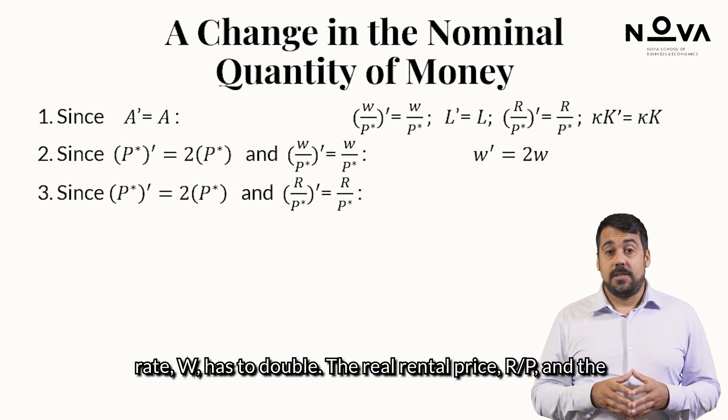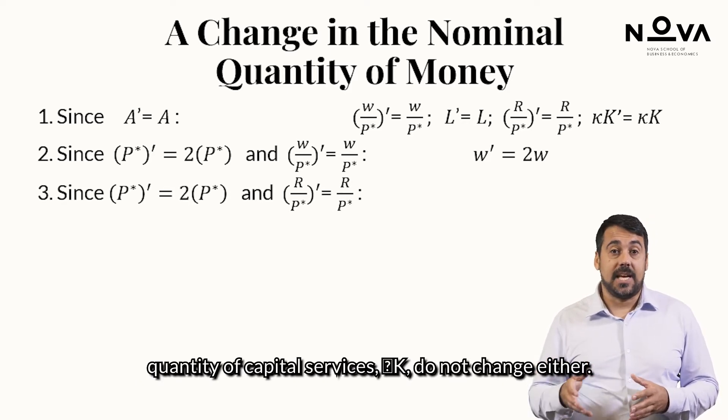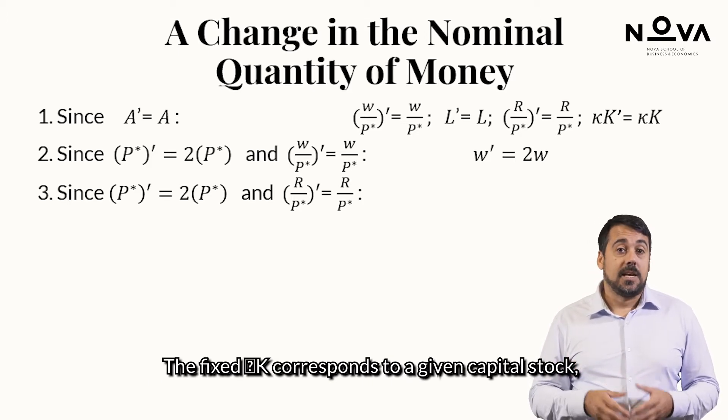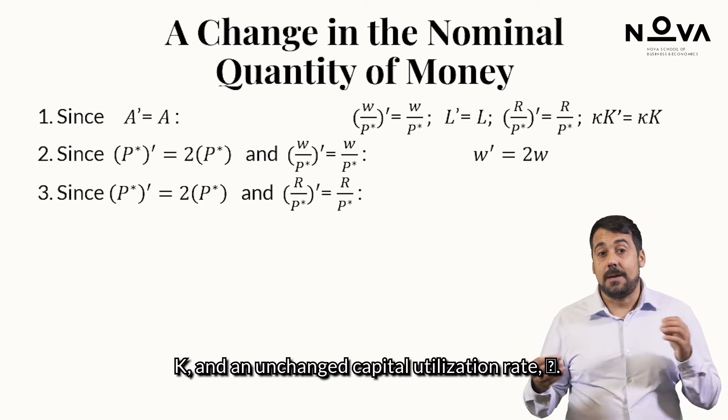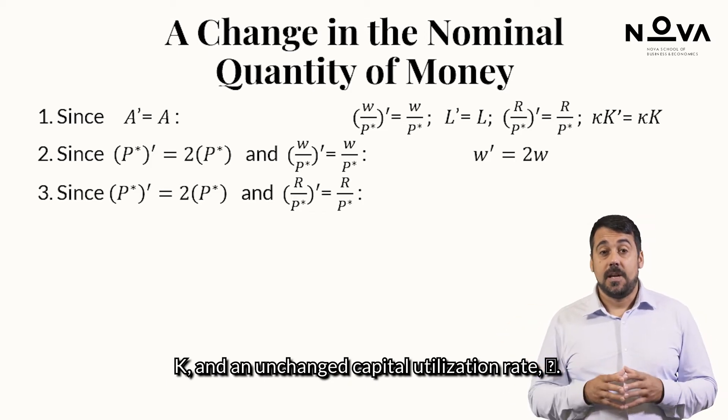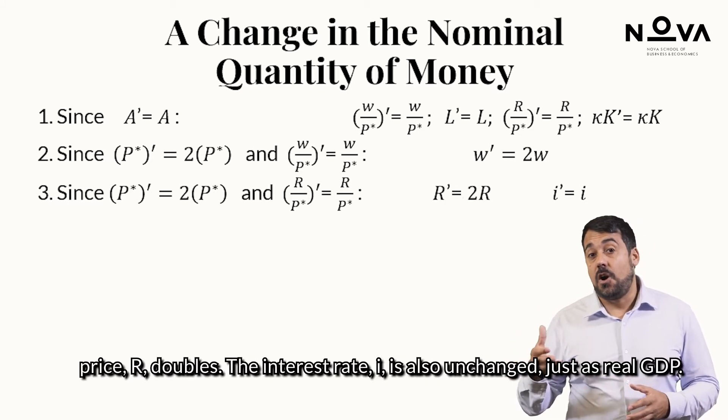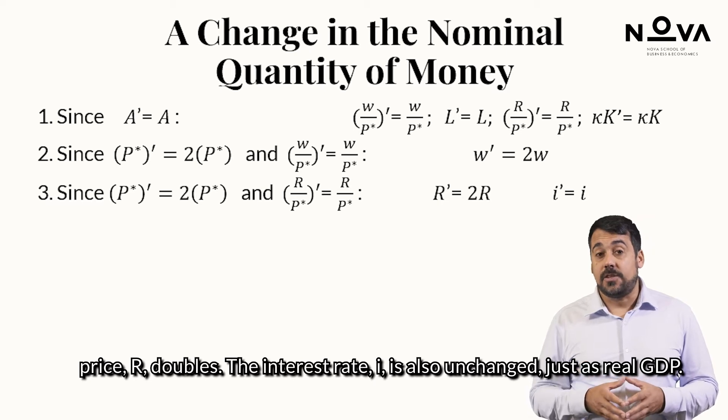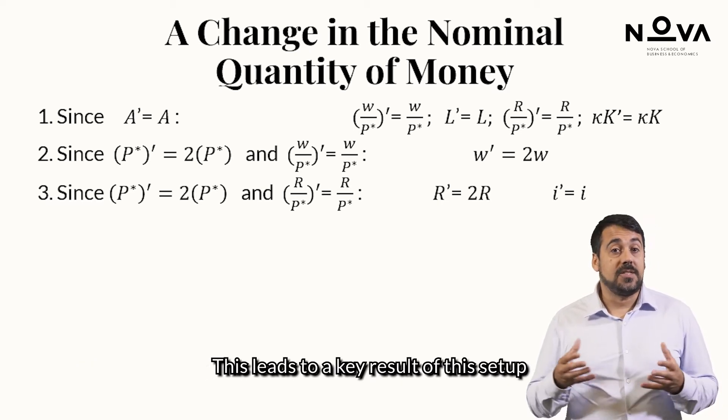The real rental price R over P and the quantity of capital services kappa times K do not change either. The fixed kappa times K corresponds to a given capital stock K and an unchanged capital utilization rate kappa. We must have, in general equilibrium, that the nominal rental price R doubles. The interest rate I is also unchanged, just as real GDP.